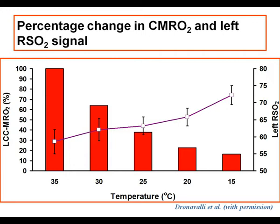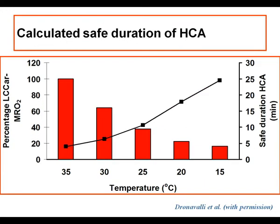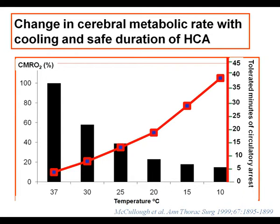By taking the safe arrest duration as 4 minutes at 35 degrees centigrade, we can calculate what each temperature component adds to the safe duration of HCA. At 30 degrees centigrade the safe duration is only about 8 minutes, but at 15 degrees centigrade the safe duration has risen to 25 minutes. Each degree of temperature fall gives additive ischemic tolerance for circulatory arrest, and these data are directly comparable to those from the GRIPS group reported a decade ago.